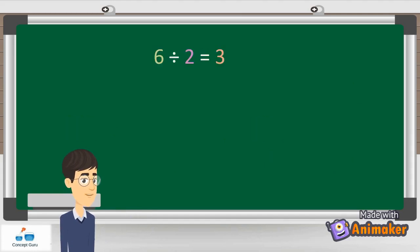Let's write the equation as six, give a division sign, and two. And the result is equal to three. We can also write it in this manner: six over two, and that equals to three.